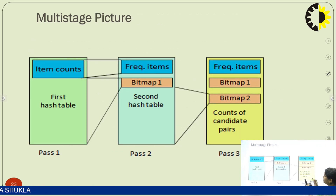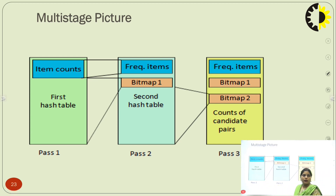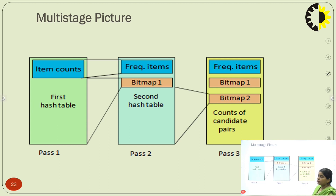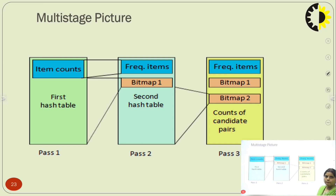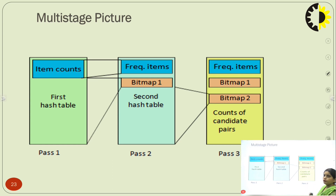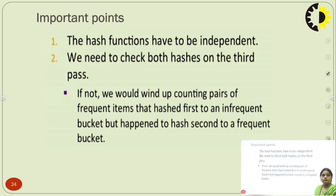Here is the pictorial representation of the multistage algorithm: in pass 1 we have item counts and the first hash table; in pass 2 we have frequent items from the item counts, bitmap vector 1, and the second hash table; in pass 3 we have frequent items, bitmap 1, bitmap 2, and the counts of the candidate pairs.